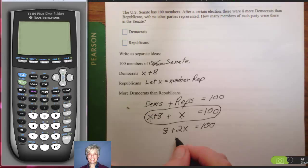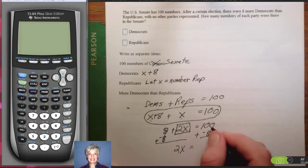And then, the first thing I'm going to do is get the X term, the variable term by itself. This 8 is added on to it, so I'm going to add the opposite of 8 to both sides of the equation. 8 plus negative 8 is 0, leaving me with 2X. 100 plus negative 8 is 92.